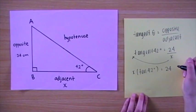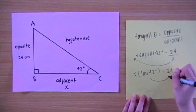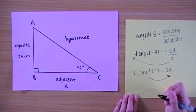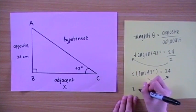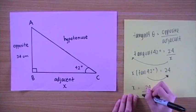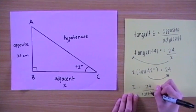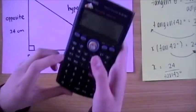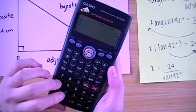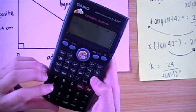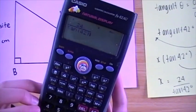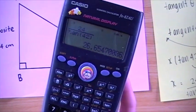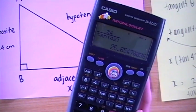Then we divide by tan 42 degrees so that X is the subject. Now we can use a calculator to find X equals 24 over tan 42, which gives 24 over tan 42 equals 26.65, rounded to two decimal places.